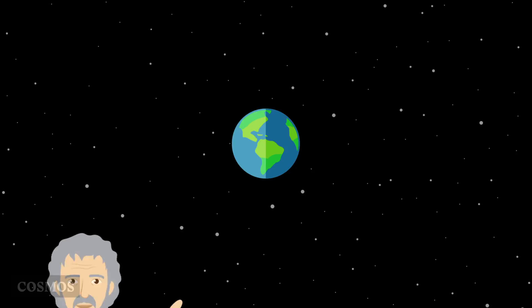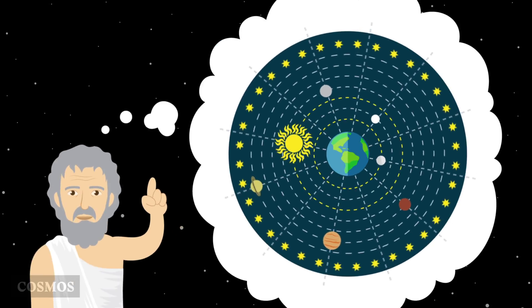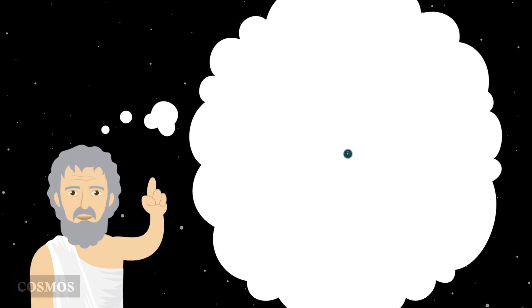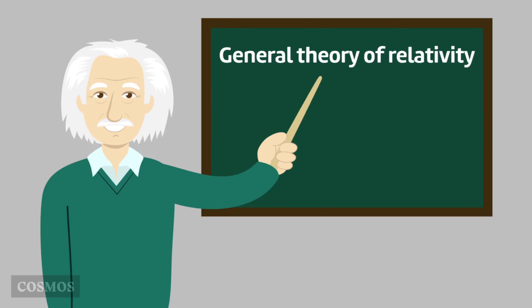You might think that this confirms what the ancient philosophers thought, that we're at the centre of the universe. But Einstein already had an alternative way of interpreting the observations, with his general theory of relativity.